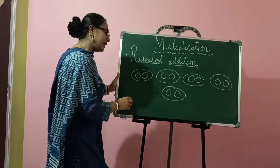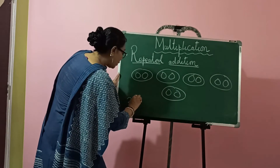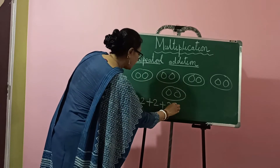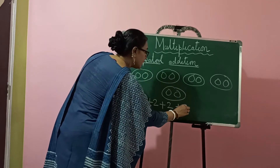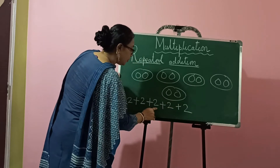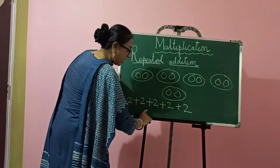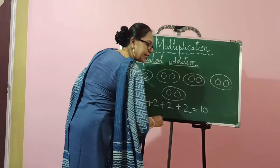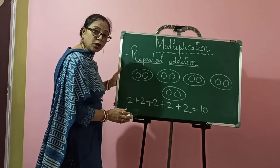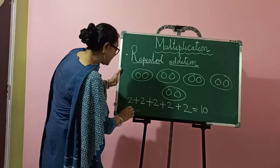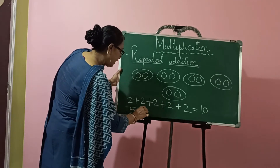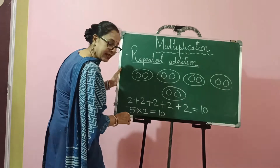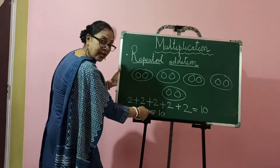So here we have 5 groups and in each group we have 2 each. Hence we can write this as 2 plus 2 plus 2 plus 2 plus 2, counted 5 times. That gives us 10. In short we can write this as 5 into 2 is equal to 10 — five 2's are 10.